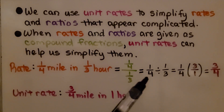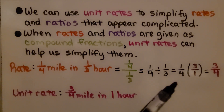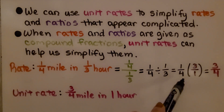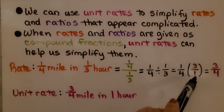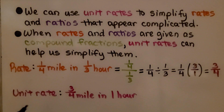We've got 1/4 divided by 1/3. To divide fractions, we multiply by the reciprocal of the divisor. So we have 1/4 times 3/1. That gives us 3/4. So our unit rate is 3/4 mile in 1 hour.